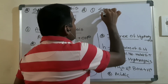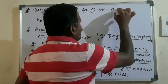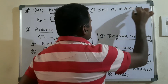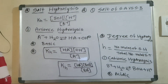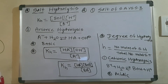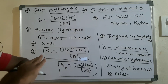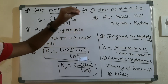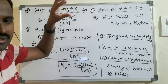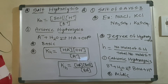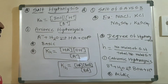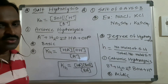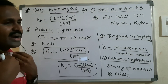The first type — salt of a strong acid and strong base — does not undergo hydrolysis, because both the acid and base ionize 100%. There is no change in H⁺ or OH⁻ ion concentration observed, so this type of salt does not undergo hydrolysis.